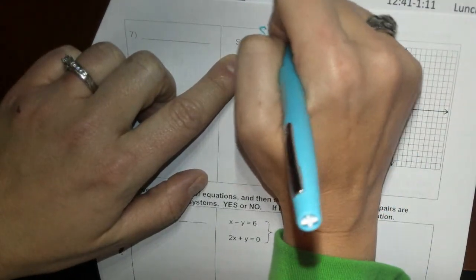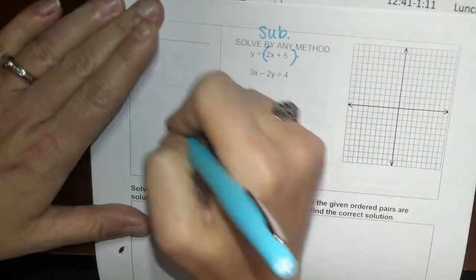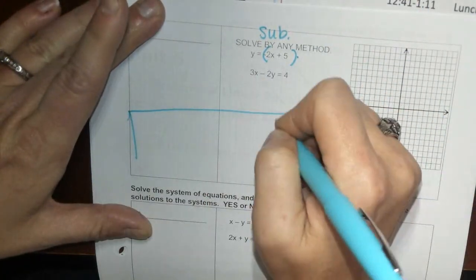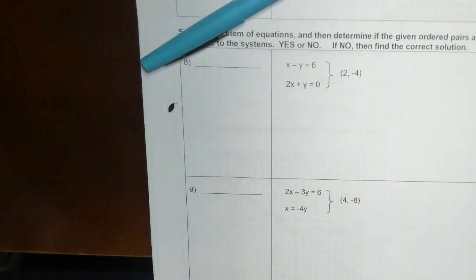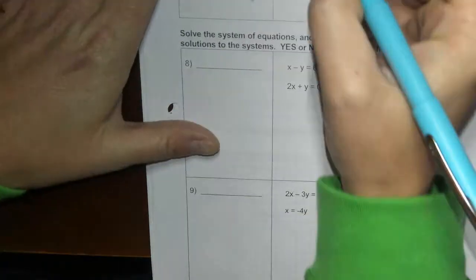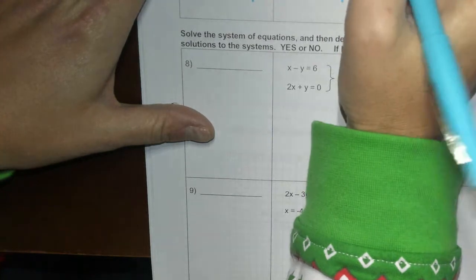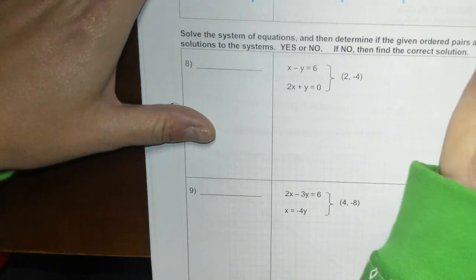That's what I'm going to use here because I do have one in y equals already. So I'm going to use substitution. So I'm going to take what they give me for y. Let's go ahead and draw those boxes.